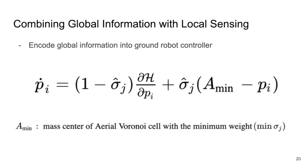Again, the local controller is the same as the spatial gradient introduced earlier. This proposed controller switches between allowing robots to globally and locally explore regions on the domain, and thus effectively uses the aerial information to overcome the range-limited sensing of the ground robots. In this proposed expression, A-min represents the mass center of the aerial Voronoi cell with the lowest cell weight sigma, not the bounded sigma hat.